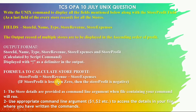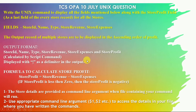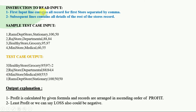If the store profit is less than zero, then the store profit is negative. We need to use a particular command line argument to access the input file. The instruction says: the first input line contains all records for the first store separated by comma, and subsequent lines contain all details of the remaining stores. A sample test case output is also given.